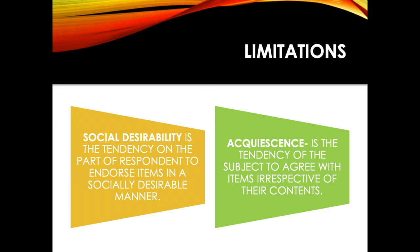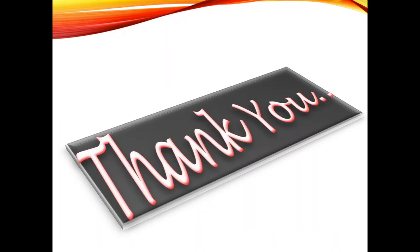With all its benefits, the MPI does have a few limitations — majorly social desirability and acquiescence. Many times people do not reveal themselves fully and present themselves in a good light, giving very socially desirable answers. Also, some people have a tendency of just agreeing with all items irrespective of their content — they don't even read them and just keep putting ticks. That is acquiescence. I hope you found this video helpful. Thank you so much for watching.